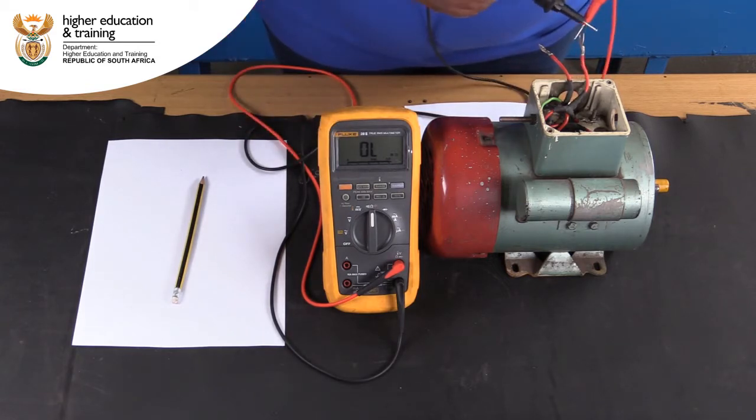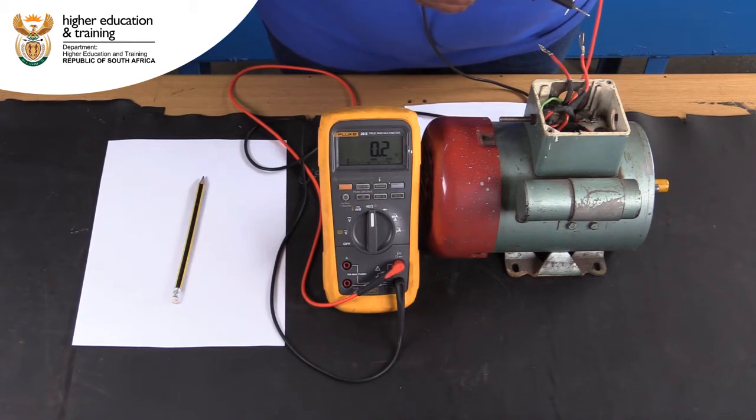Here we have our multimeter already on the ohm setting. Remember to short your leads before you start to make sure that your multimeter is correctly calibrated.